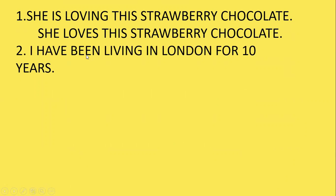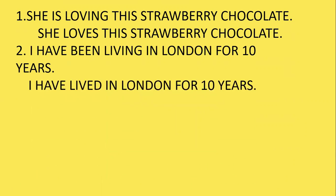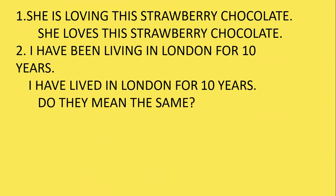Look at the next example: 'I have been living in London for 10 years' versus 'I have lived in London for 10 years.' Do they mean the same? 'Have been living' is present perfect continuous — for actions which began in the past but are still continuing. Whereas 'have lived' is present perfect, meaning the action is completed in the near past. Anyways, in both cases he or she is still living in London.